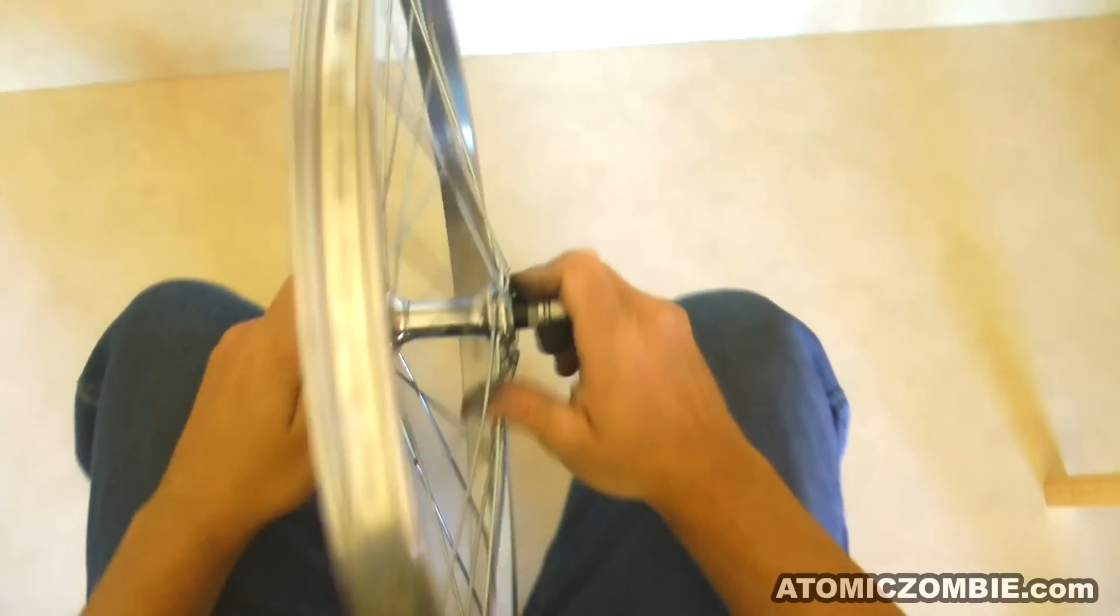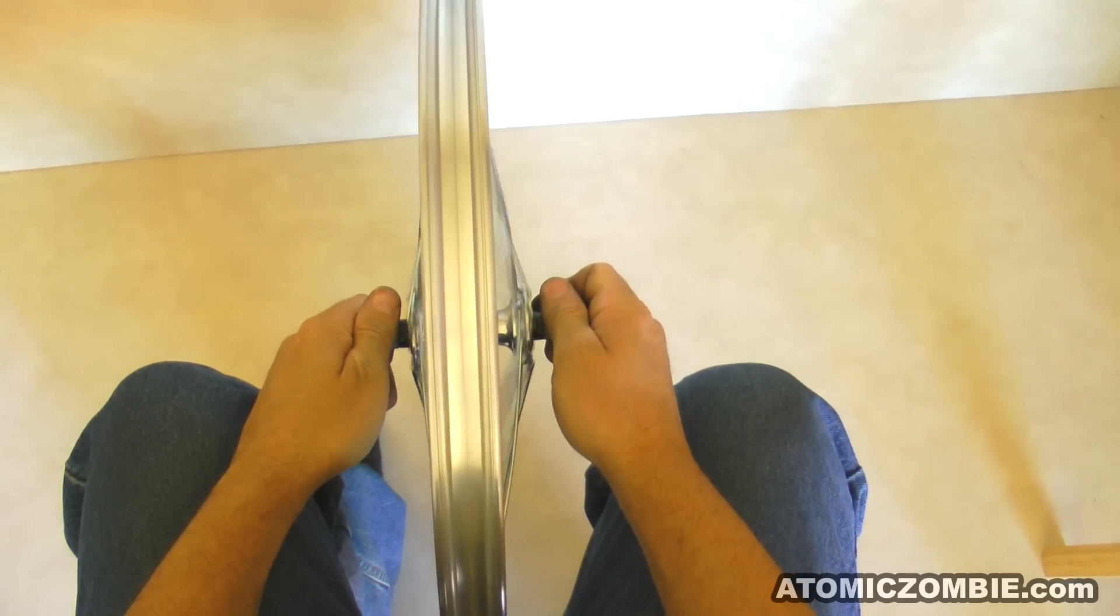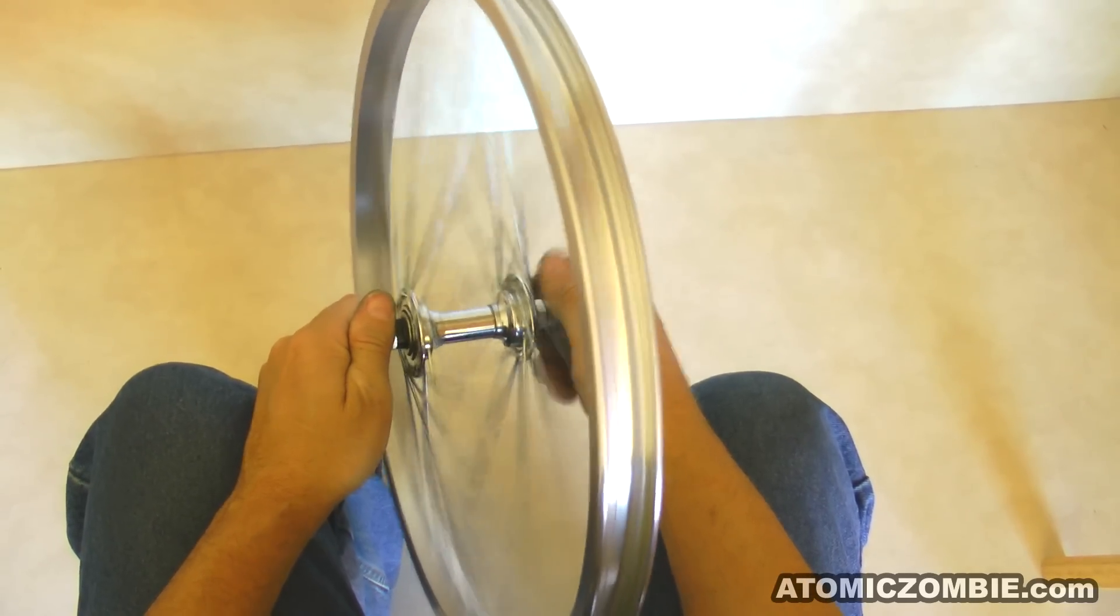At this point, you will need a truing stand to hold your rim for the final adjustments. A pair of front forks will work perfectly for this.